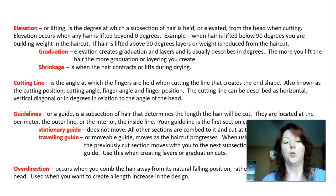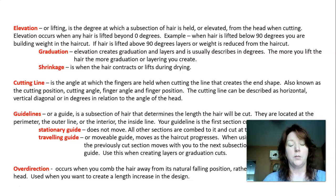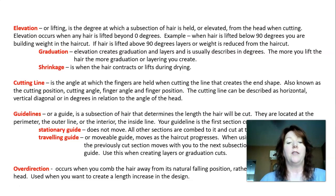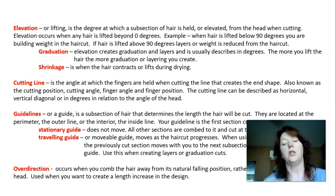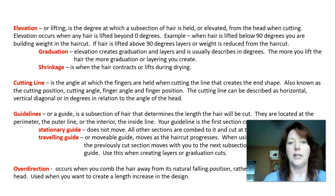There are two different kinds of guidelines. A stationary guide does not move — everything is brought to that guide, as in a blunt cut where everything comes down to meet it. A traveling guide, or movable guide, moves with the haircut as it progresses — as you move down the back, the guideline moves with you. It's really important to understand the difference between a stationary guideline and a traveling guideline.